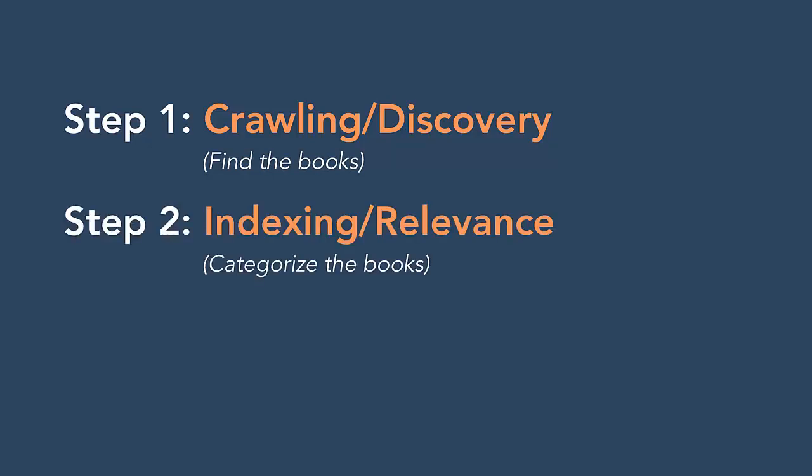The second step is to categorize the books. This is indexing. The books in your library cover all sorts of topics: fiction, non-fiction, science, history, and technology. How do you sort them?